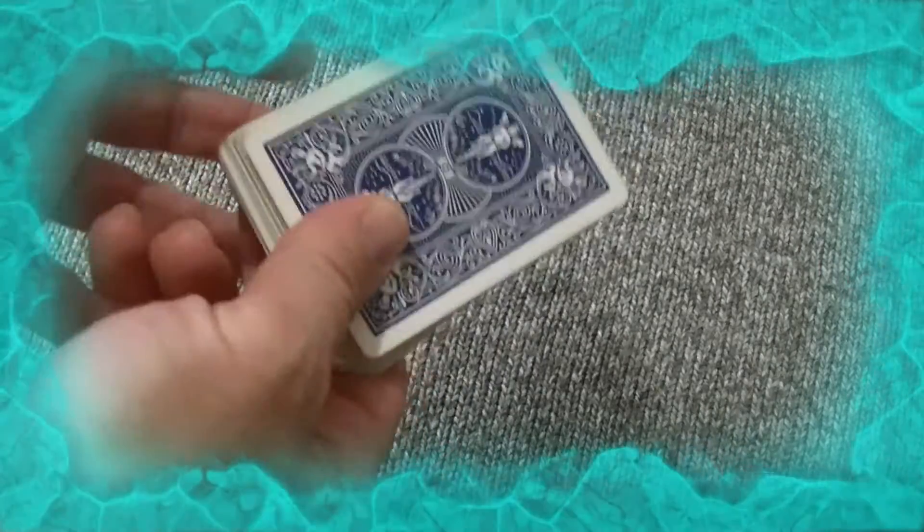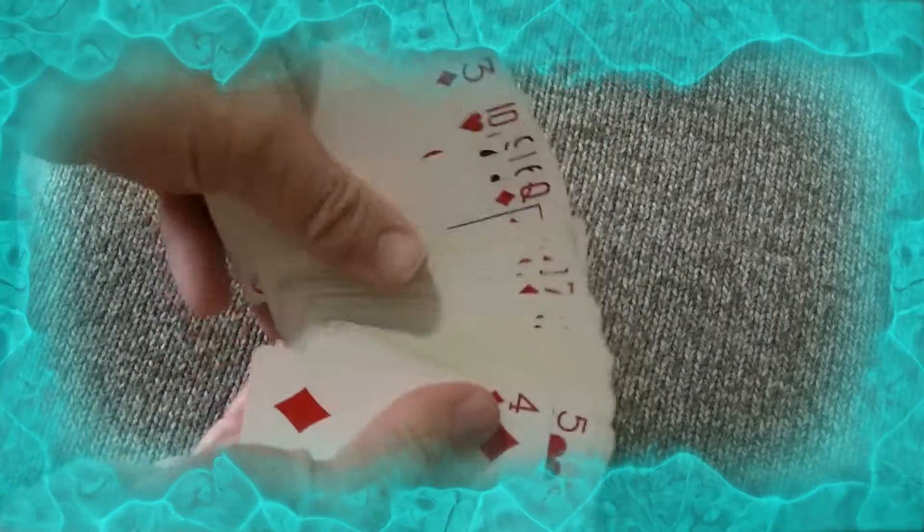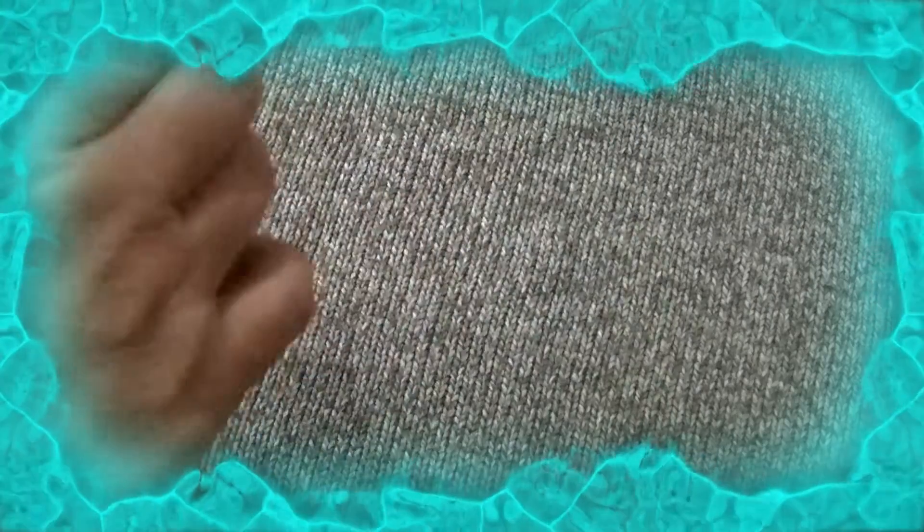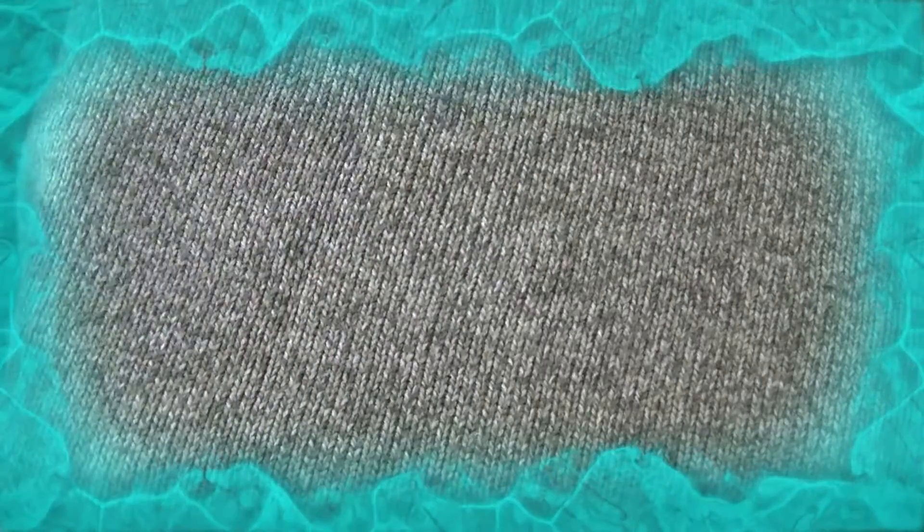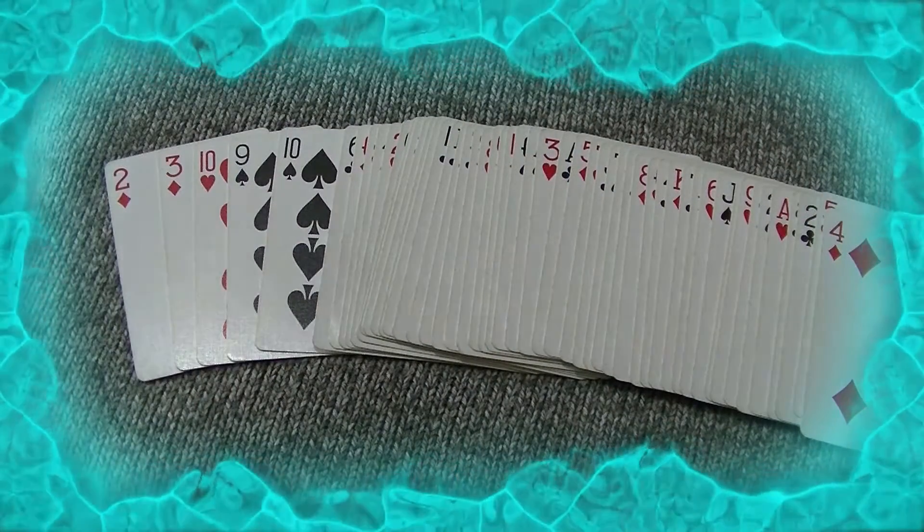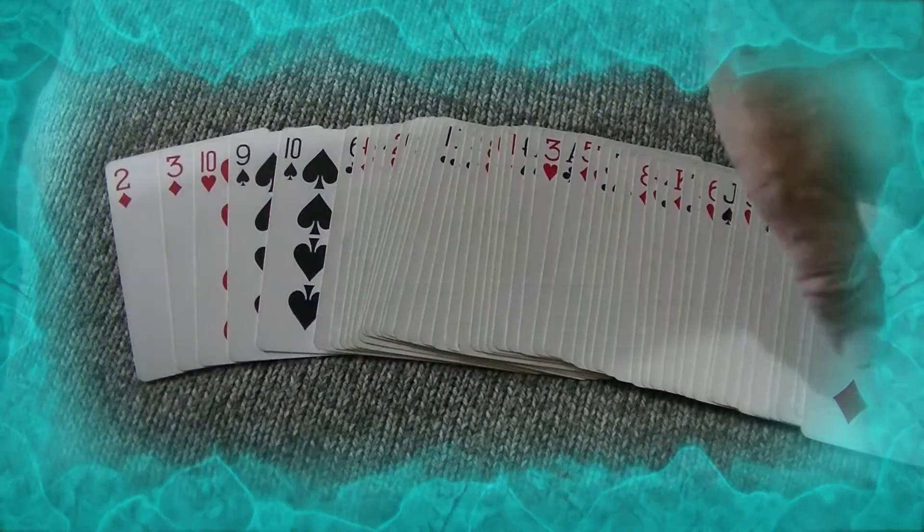This is an ordinary pack of playing cards. As you can see they are in a random order. You can hand them to the person you are performing the magic trick to, to shuffle them and then hand them back. Then what you do is you spread the cards out on the table like that and you can see they are in a random order.